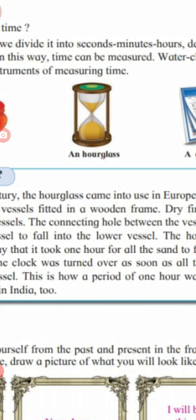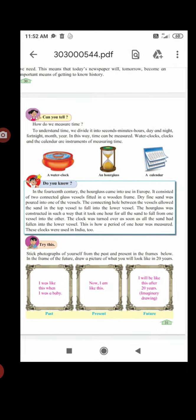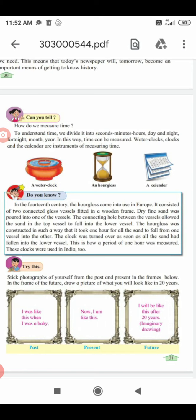Now try this activity, children. If you have your textbook, you have to stick photographs of yourself from the past and present in the frames below. In the frame for the future, draw a picture of what you will look like in 20 years. The first frame shows when you were a baby - that is the past. You are now in third standard, so you look different from when you were a small baby.